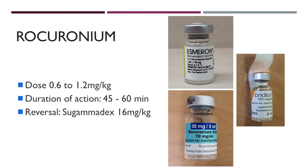Take note that rocuronium needs to be refrigerated and therefore it's not commonly found in many of the general wards. Also, the duration of rocuronium lasts for about 45 to 60 minutes and therefore, in a patient who you cannot intubate and cannot ventilate, you may need to give a reversal agent urgently. This is sugammadex which comes in 200 mg in 2 mL. The dose of sugammadex required for reversal is 16.6 mg per kg and therefore you may need to give up to 4 to 5 vials of this medication.